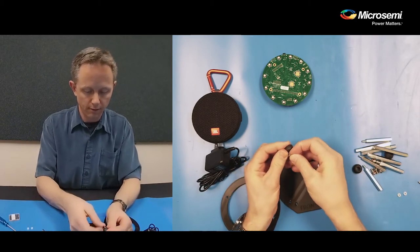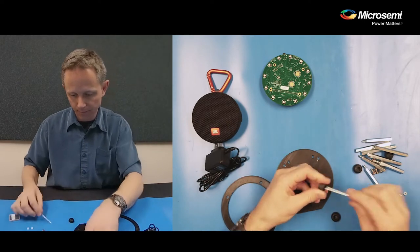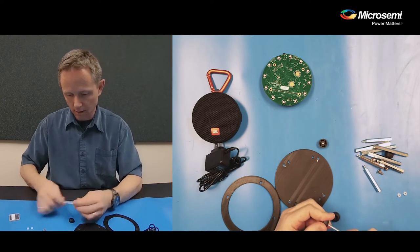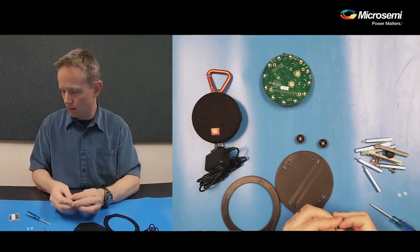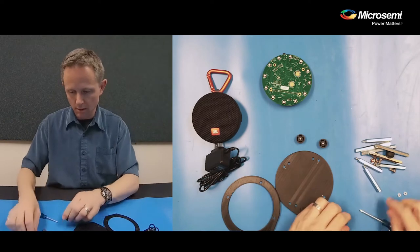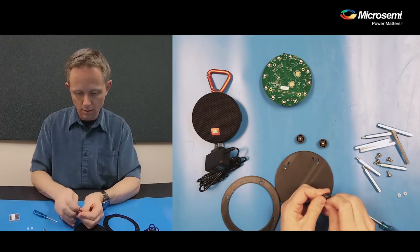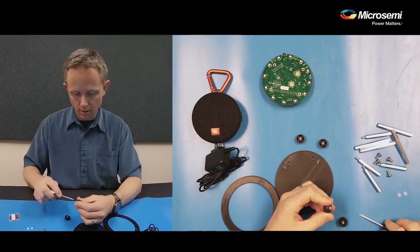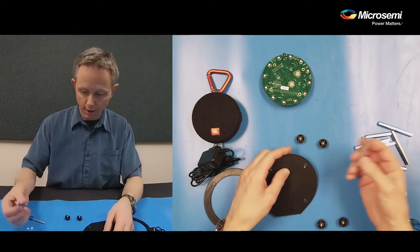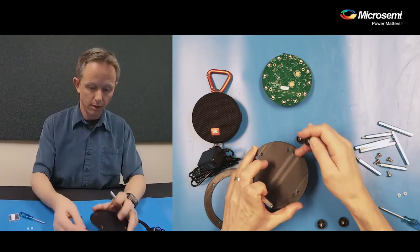So first we will insert all of the screws into the rubber standoffs here. And then we will use the shorter standoffs, the ones that have the extra thread on them. And we will use what we call the inside holes here.